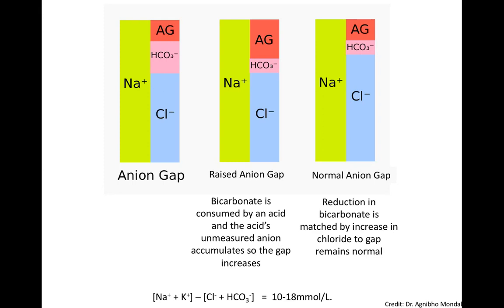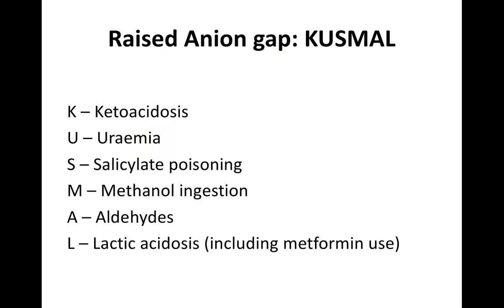For raised anion gap metabolic acidosis, a useful mnemonic is KUSMAL: Ketoacidosis (DKA), Uremia, Salicylate poisoning (aspirin or NSAIDs), Methanol and aldehydes, Lactic acidosis — including metformin use. Lactic acidosis is the most common cause and often accompanies sepsis, which is why lactate checking is part of sepsis protocols.